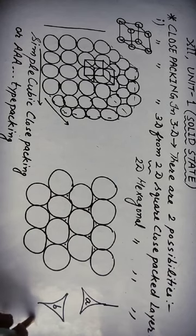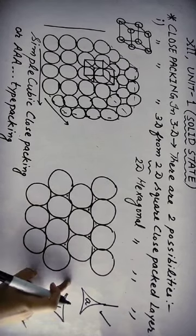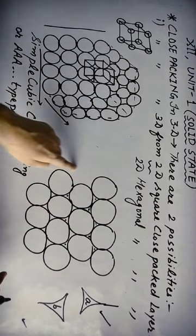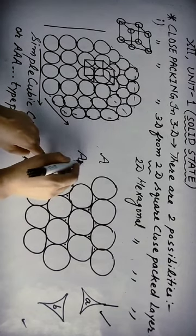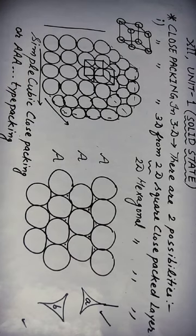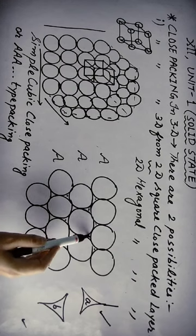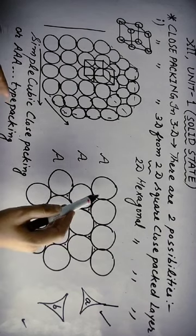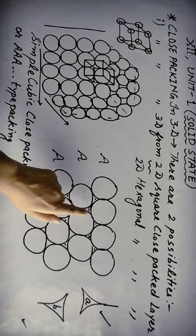The first layer of the hexagonal arrangement — all its particles are denoted as A type. Now we need to place the second layer. Here also we have two possibilities: either the second layer covers the B voids or it covers the A voids. We take the first choice — we place the second layer particles such that they cover void B.